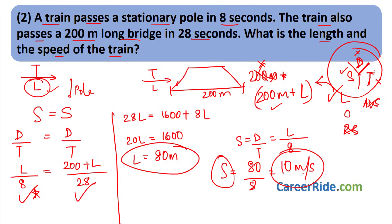See how easy it was — there is nothing to it. This is very, very similar to speed, distance, time. We just need to include the length of the train into the distance travelled. If you have not gone through speed, distance, time, go through that video and you will be able to understand these sums much faster.